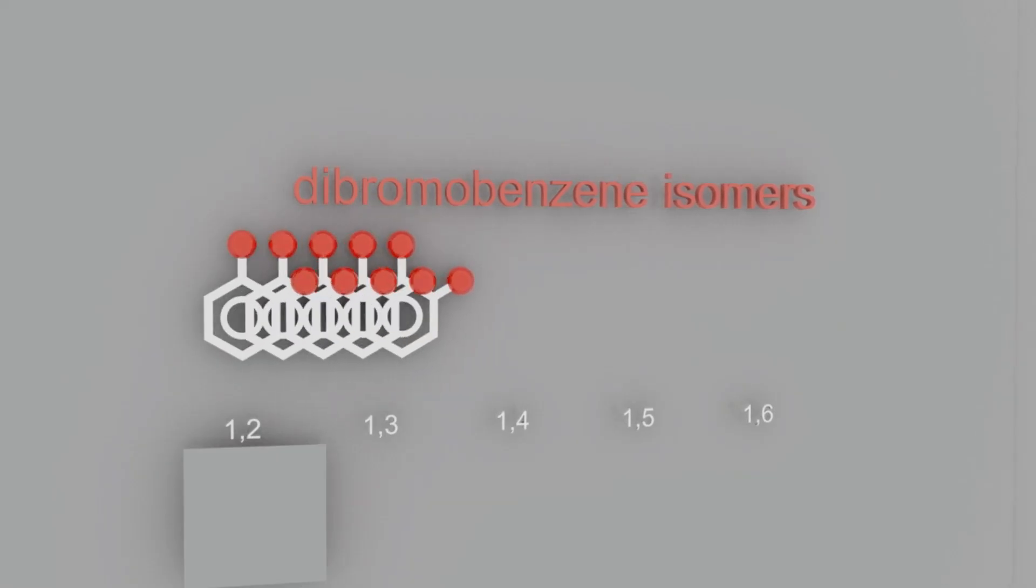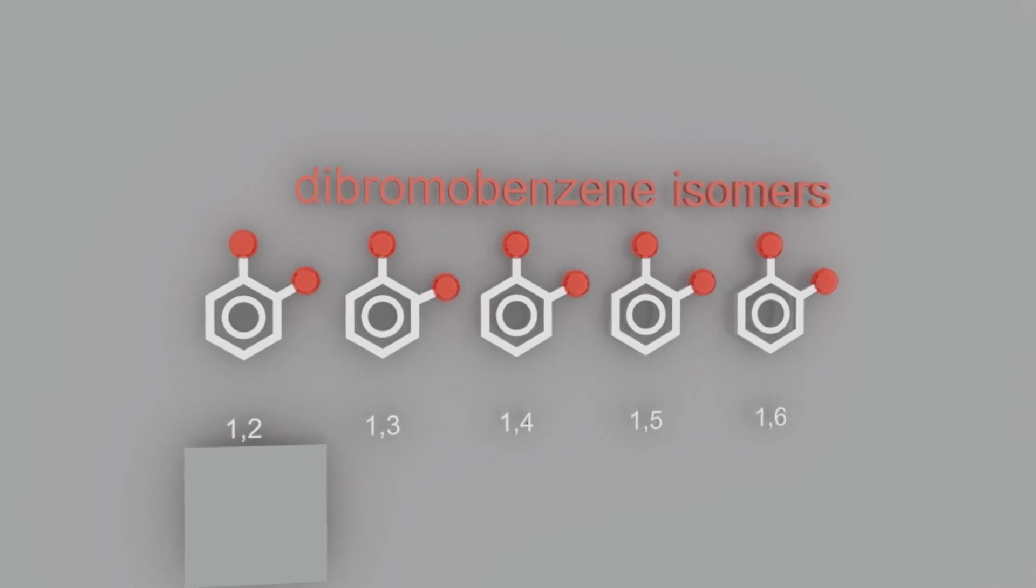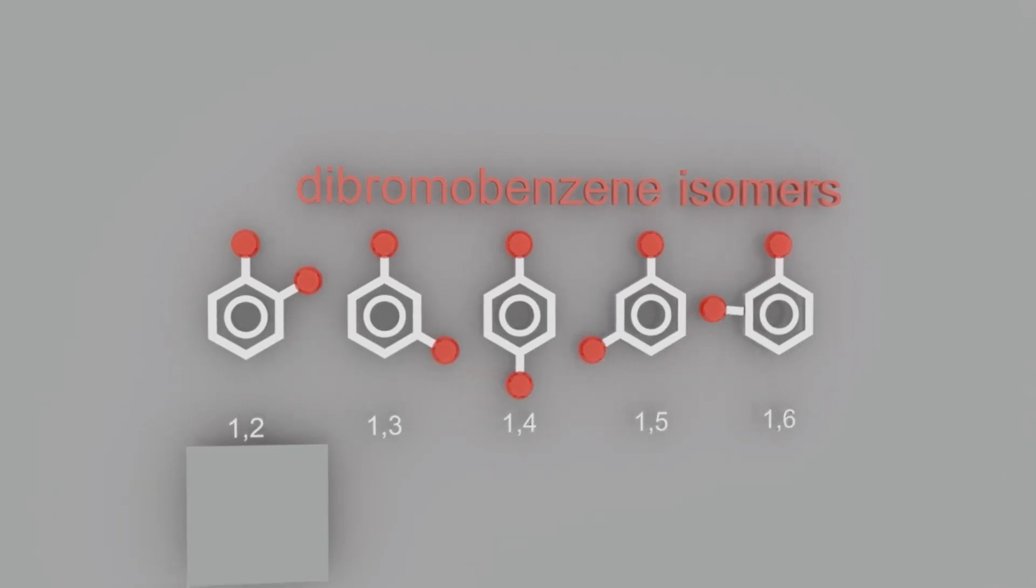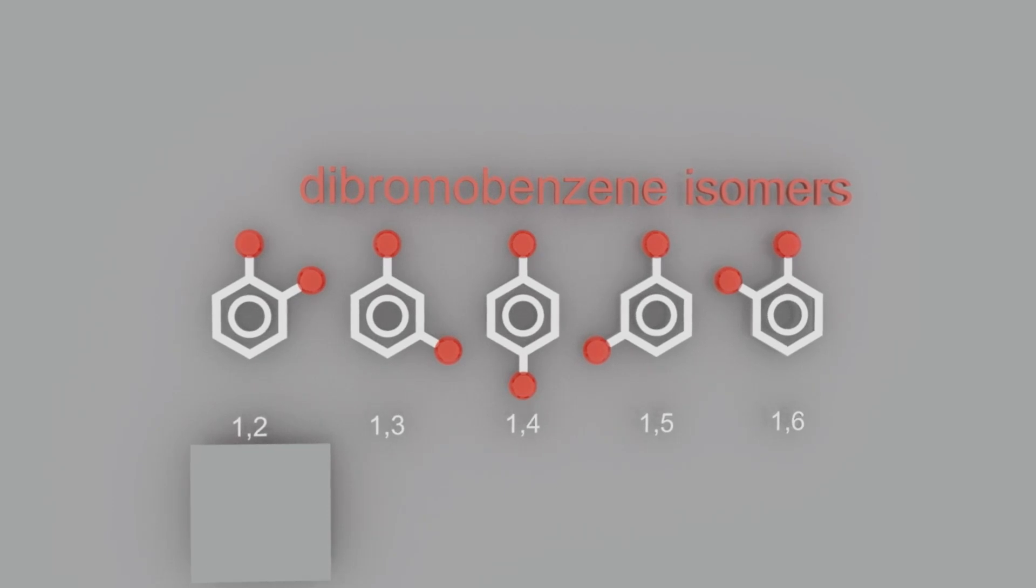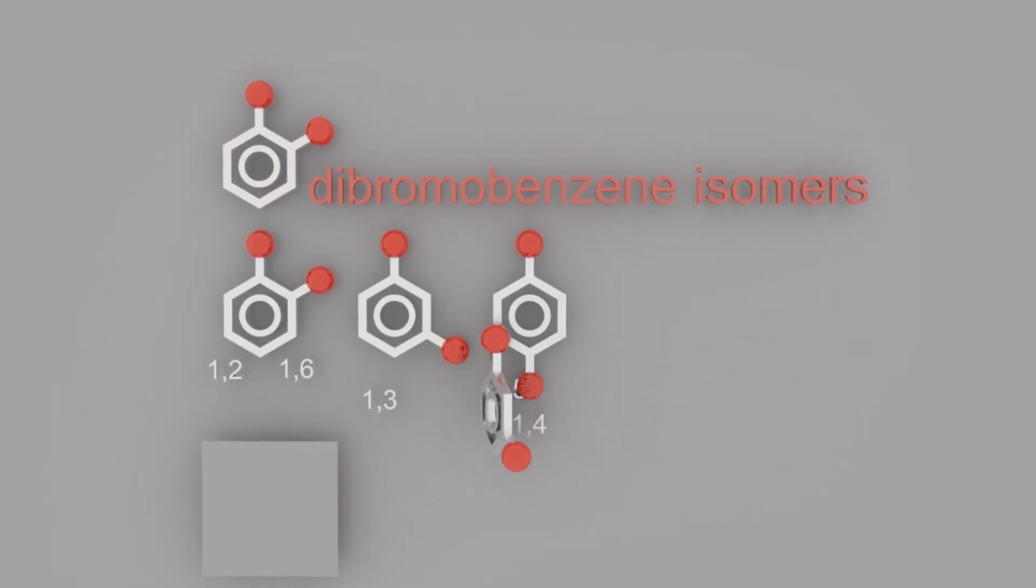Using the molecular orbital model, you might naively think there are five dibromo isomers based on the benzene molecule. But close inspection shows that the 1,6 and 1,2 are identical, as are the 1,5 and the 1,3, leaving only three isomers in total for the molecular orbital model.